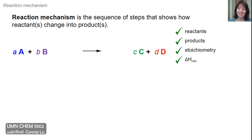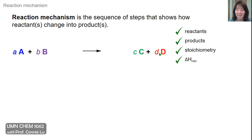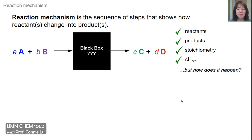The reaction mechanism is the sequence of steps that shows how reactants change into products. When we have a chemical reaction represented by this equation, there's lots of information in it. We know the reactants A and B, we know the products C and D, and their stoichiometry as represented by these lowercase letters that represent coefficients. If we can calculate the energies of the reactants and products, we can also calculate the delta H of the overall reaction. But despite knowing all this, we don't know much about how it happens — what's actually going on inside this black box as reactants are being converted into products.